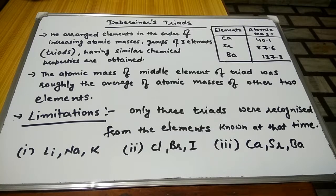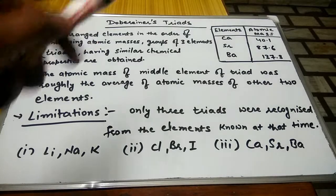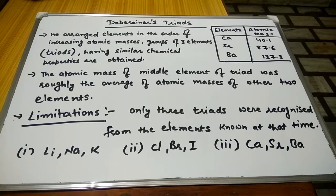Now let us discuss another topic of periodic classification which is Dobereiner's Triads. This was the first time any scientific person has tried to classify the elements of the periodic table. On the right side you can see the elements and atomic masses are written in the table.